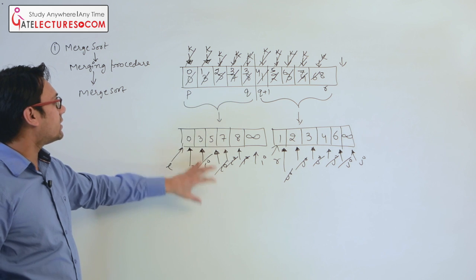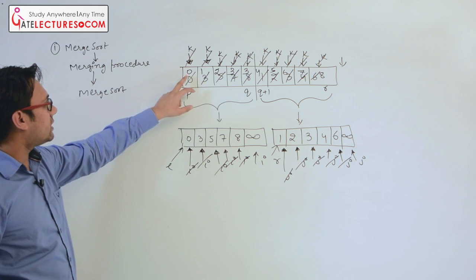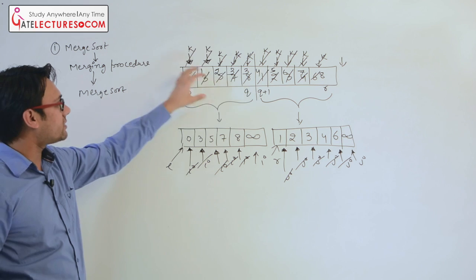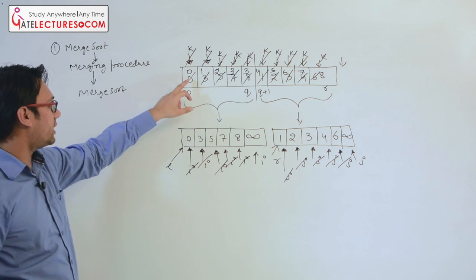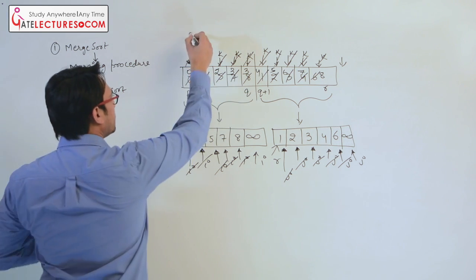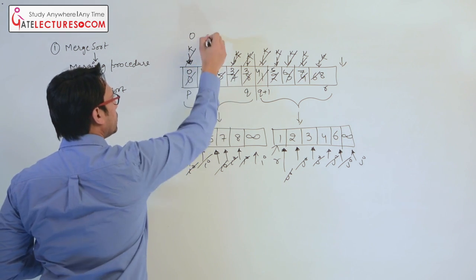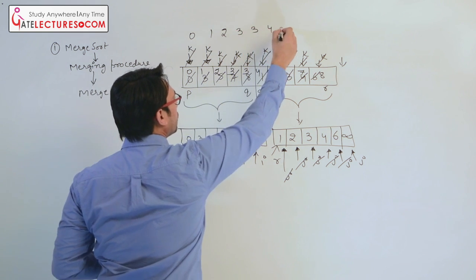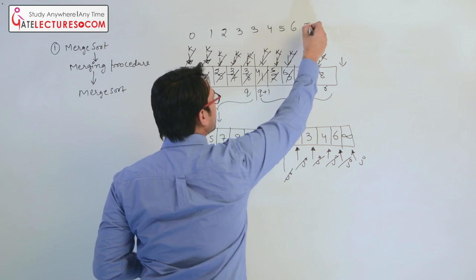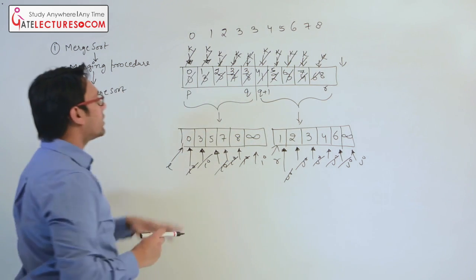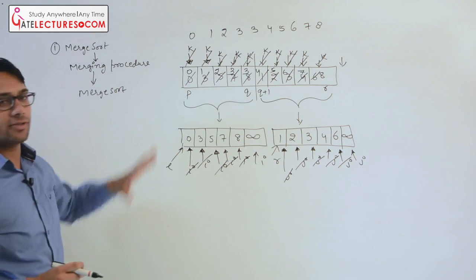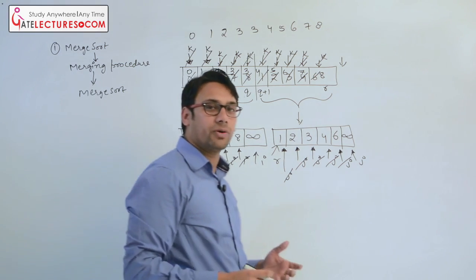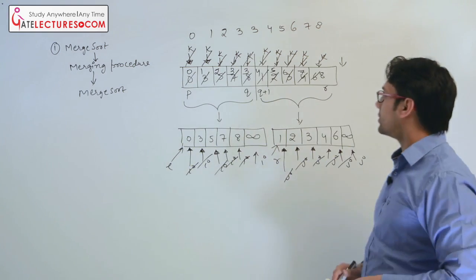After this complete process, the entire array is in sorted position. The data array now reads 0, 1, 2, 3, 3, 4, 5, 6, 7, 8 — completely sorted. This was the merging procedure. Now let us see how we can write a program to perform this merging procedure.